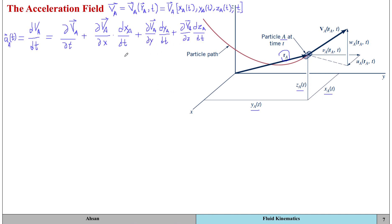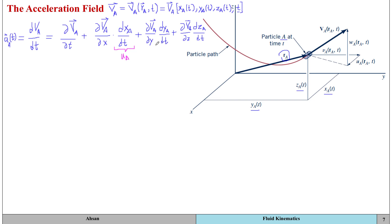Looking at this equation carefully, the term dx_A/dt represents the change in position with time — in other words, it is a velocity component. Since we are only looking at the x-component of position with respect to time, this is the u-component of the particle's velocity. Similarly, dy_A/dt is the v-component v_A, and dz_A/dt is the w-component w_A of the particle's velocity.